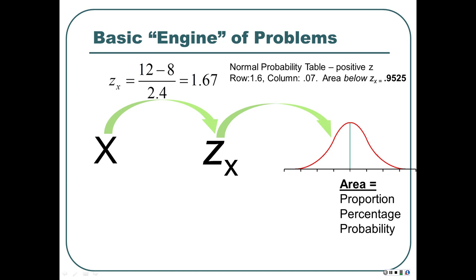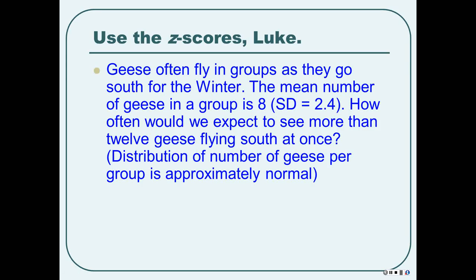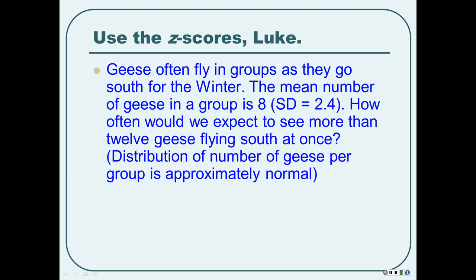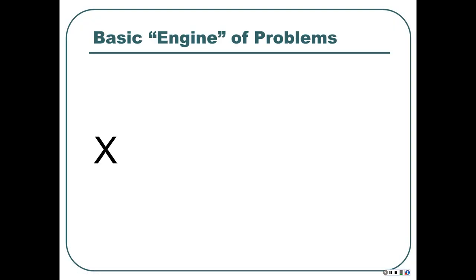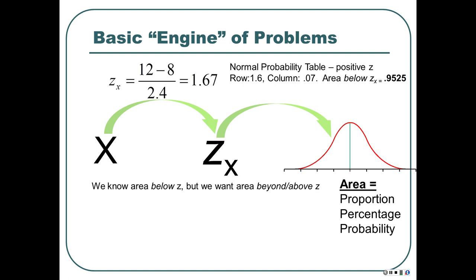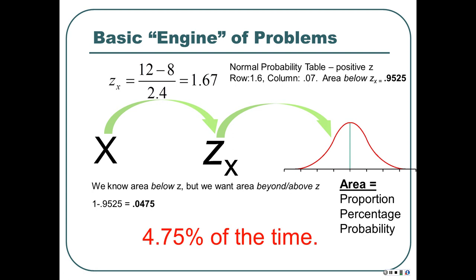Now we don't want that. We need to know the area above, because the problem says: how often would we expect to see more than 12? More than means from there on up. Don't get hung up on '12 or more' versus 'more than 12' because in a density distribution an individual value has no meaning in itself. So we just take 1 minus. If the area below z is 0.9525, then 1 minus 0.9525 is 0.0475. So 4.75% of the time we would expect to see groups of 12 or more geese. We should only see that less than 5% of the time — less than 1 in 20.